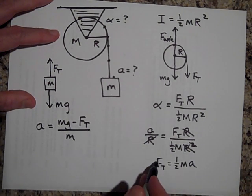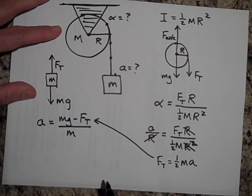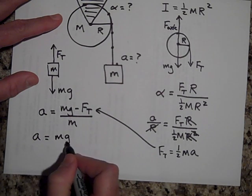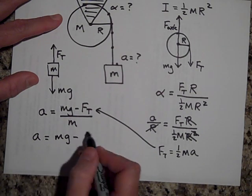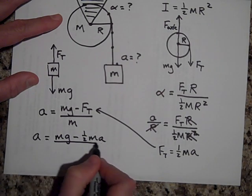I'll bring that over here now, put it into there. So a equals mg minus FT which is one half ma all over m.